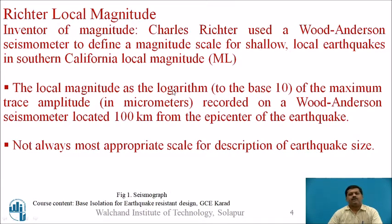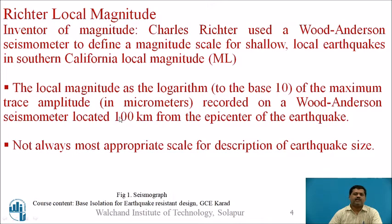However, the Richter scale is not always the most appropriate scale for describing earthquake size, because it has limitations. The seismometer must be located exactly 100 km from the epicenter and it must be a Wood-Anderson seismometer specifically.